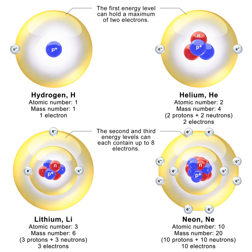Their properties and interactions are described by nuclear physics. The chemical and nuclear properties of the nucleus are determined by the number of protons, called the atomic number, and the number of neutrons, called the neutron number. The atomic mass number is the total number of nucleons.